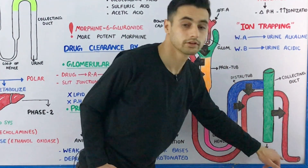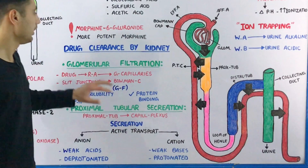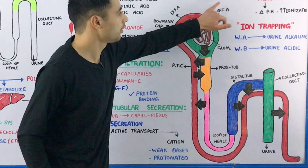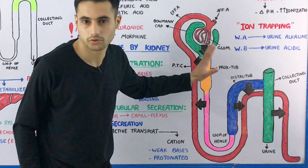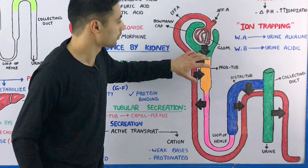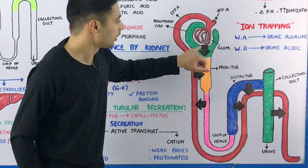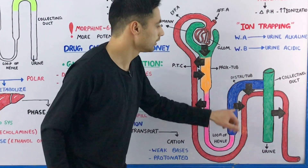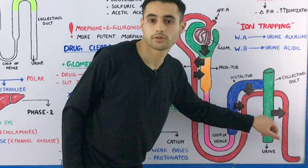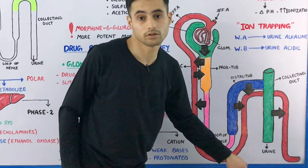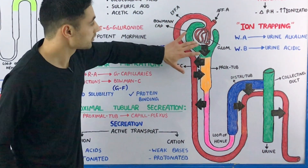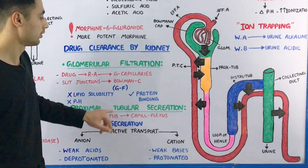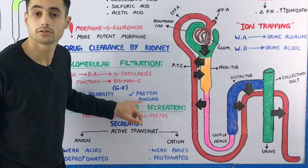In glomerular filtration, the free drug arriving from the afferent arteriole is filtered into the Bowman's capsule by pressure filtration. After the Bowman's capsule, it enters the proximal tubule, loop of Henle, distal tubule, and collecting duct, and is finally eliminated in the urine.